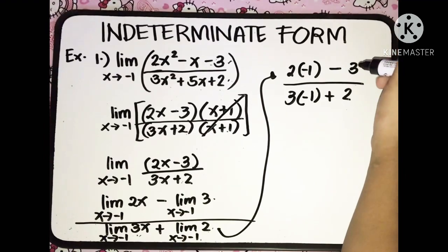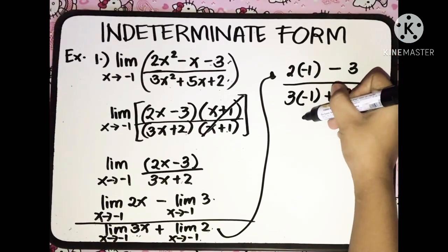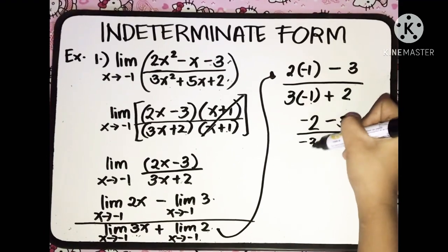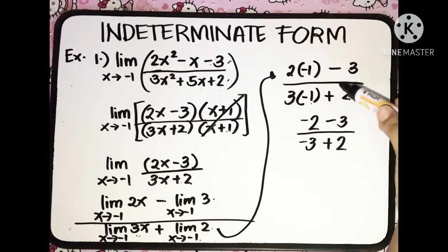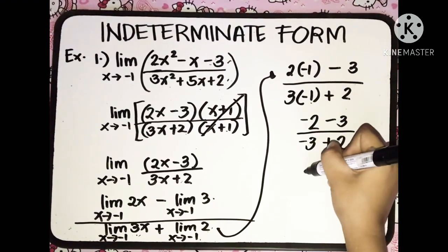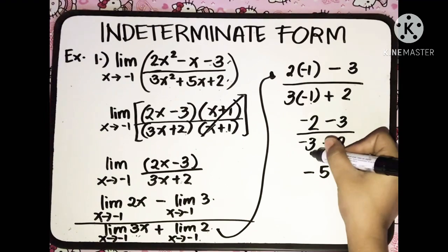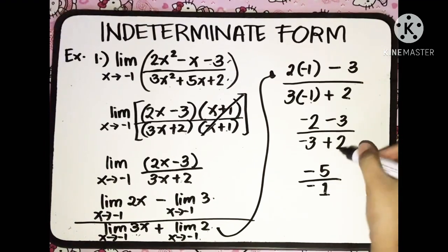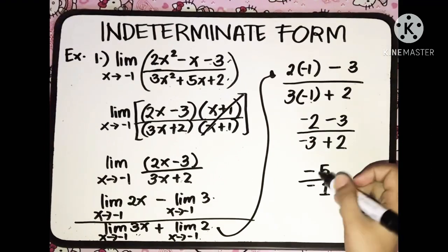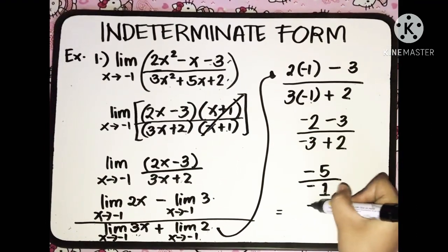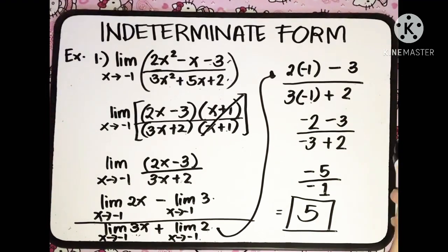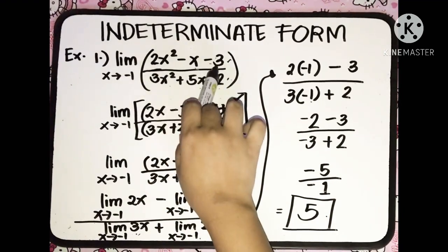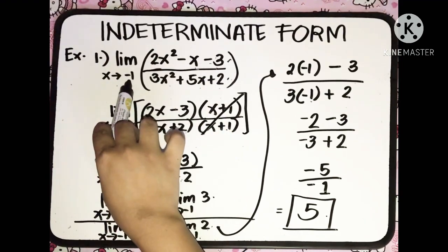Simplifying: 2 multiplied by negative 1 is negative 2, minus 3, all over 3 multiplied by negative 1 which is negative 3, plus 2. So negative 2 minus 3 is negative 5, and negative 3 plus 2 is negative 1. So we have negative 5 over negative 1, which simplifies to 5. So 5 is the true limit of the given function — the limit of (2x squared minus x minus 3) over (3x squared plus 5x plus 2) as x approaches negative 1.